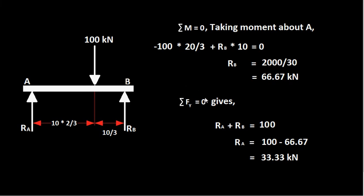Using the second equilibrium equation — summation of forces in the Y direction = 0 — there are no forces along the X axis here, so only these two conditions are needed. Ra + Rb − 100 = 0, which gives Ra + Rb = 100. Since Rb = 66.67 kN, Ra = 100 − 66.67 = 33.33 kN.